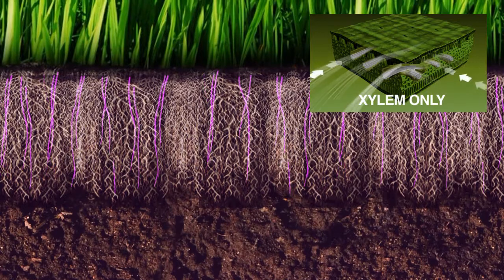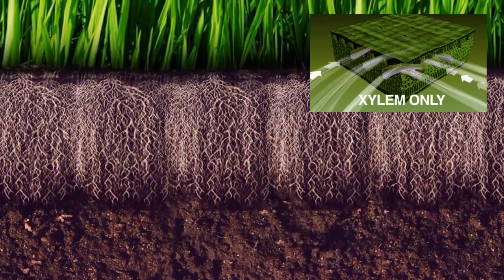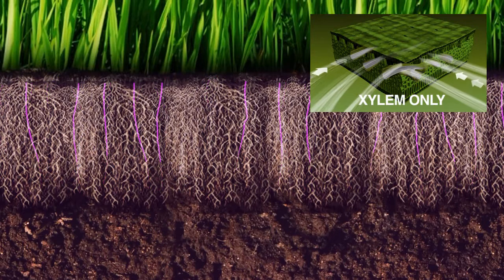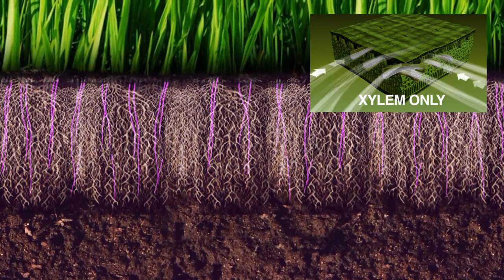When using conventional foliar nutrients, the plant has to expend energy and time to break down these nutrients, eventually letting only minuscule portions in.